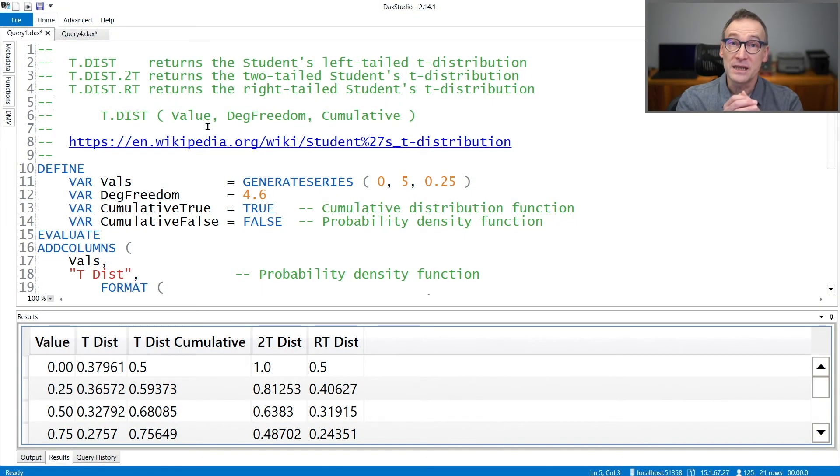tdist is a statistical function that returns the Student's t-distribution for a value given a degree of freedom.